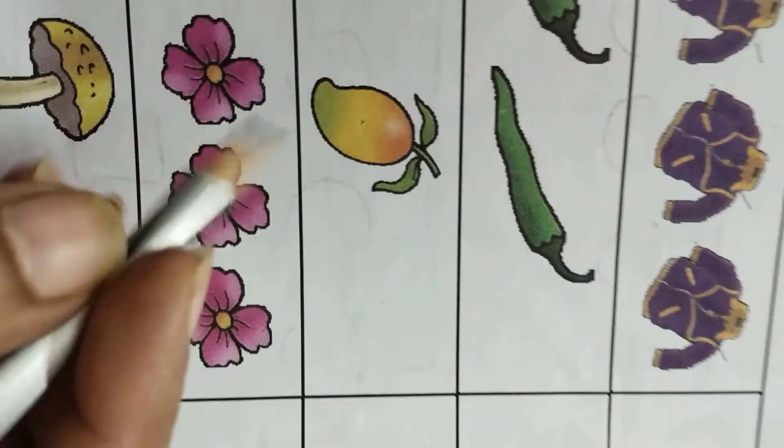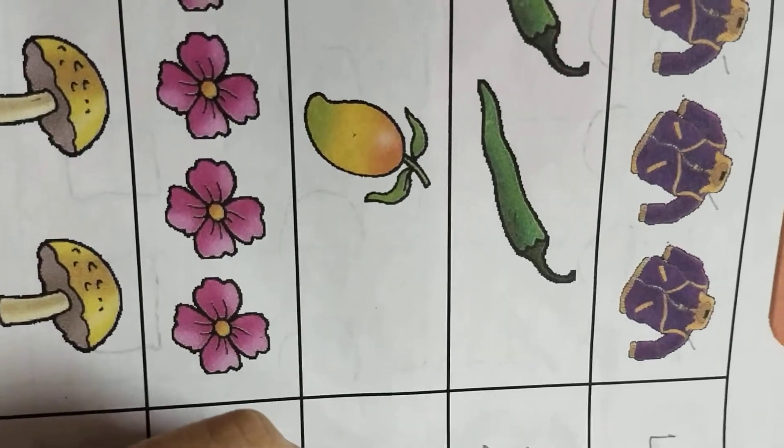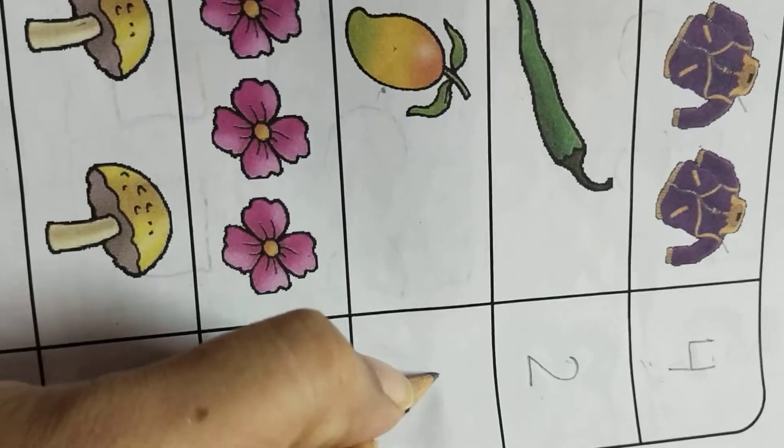What is it? Mango. How many mangoes are there? One, only one. So you will write here number one.